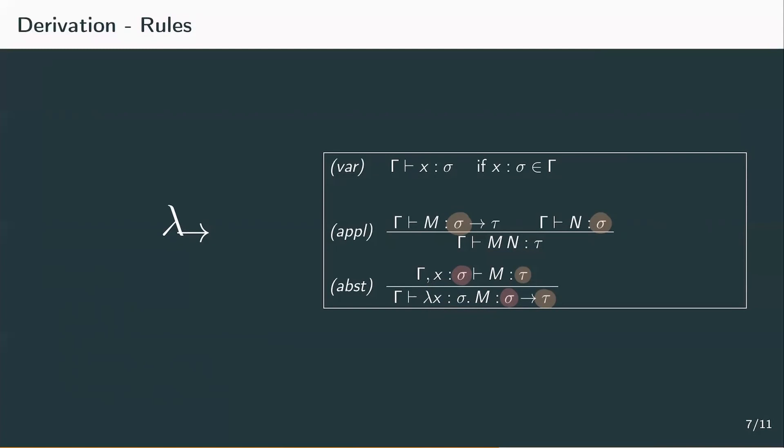You may have noticed that these derivation rules look a lot like the formation rules for lambda terms. If we have a variable, it's a legal lambda term. For two lambda terms m and n, we can form a new legal lambda term by applying m to n if their types match. And if we have a variable x and a legal term m, we can form an abstraction with its type depending on the type of x and m. These rules should enable us to derive all simply typed lambda terms.